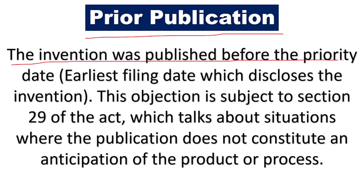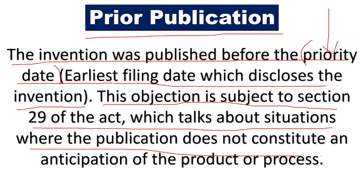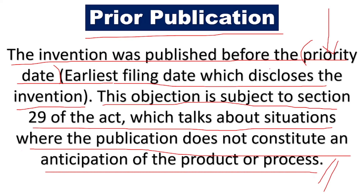The second ground is prior publication — the invention was published before the priority date. The priority date means the date on which the first application was filed, also known as the earliest filing date which discloses the invention. This objection is subject to Section 29 of the Act, which talks about situations where the publication does not constitute an anticipation. If any other person has already anticipated — meaning predicted — the invention before you filed, then they can put a pre-grant opposition.